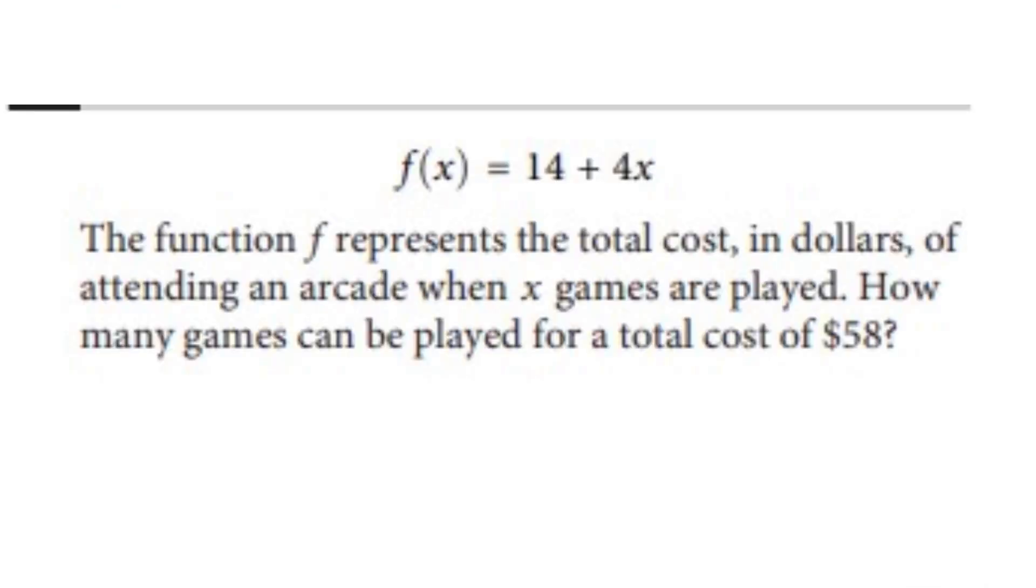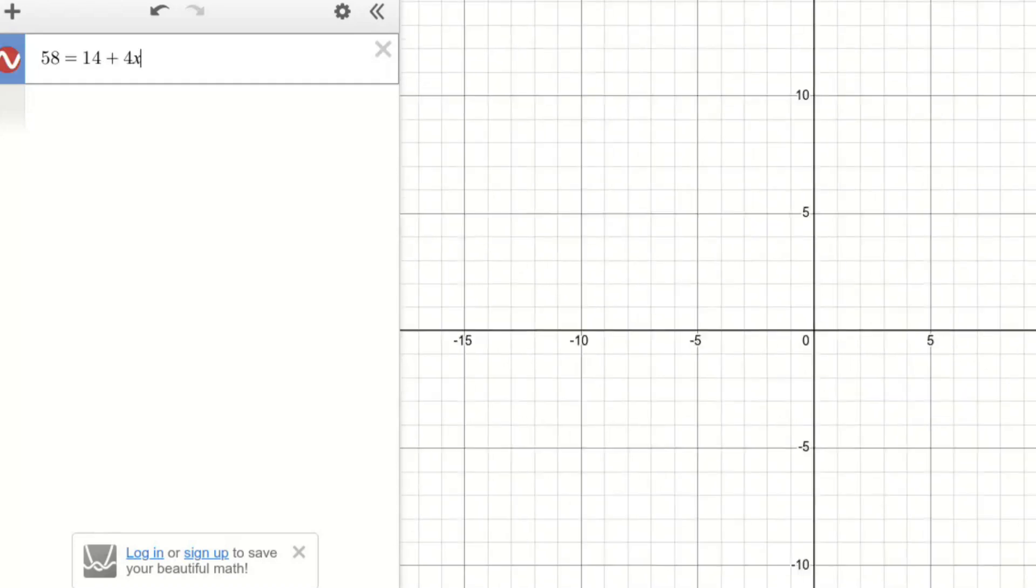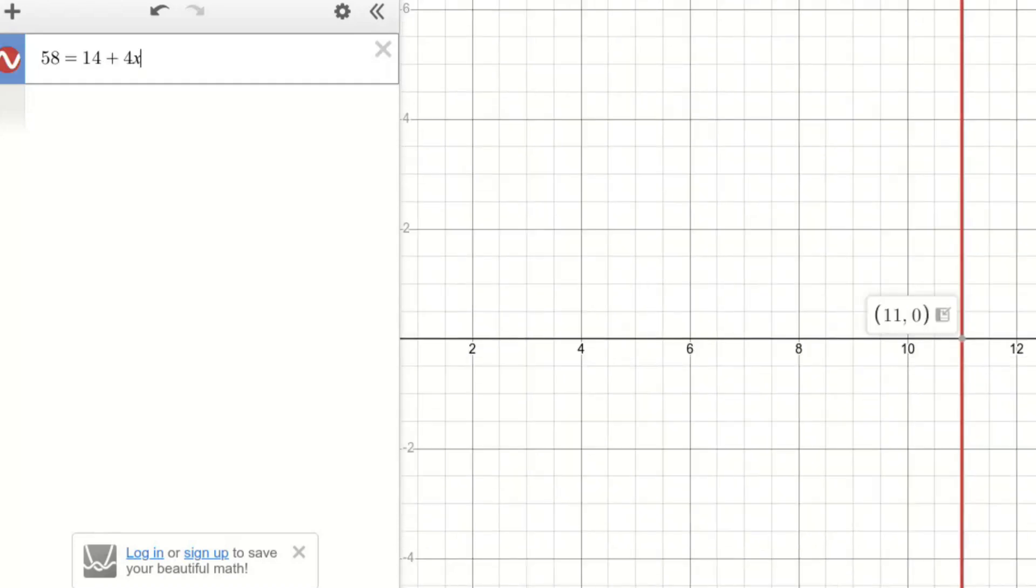Another common question you can solve using Desmos is the ones which give you a function and the value of the function and then asks you to find the input value of x. In this example, the function is f of x equals 14 plus 4x. We know from the question that the value of the function is 58. We simply write this in Desmos. 58 equals 14 plus 4x and the x value of the line that it forms is the answer to the question. In this case, the answer is 11.